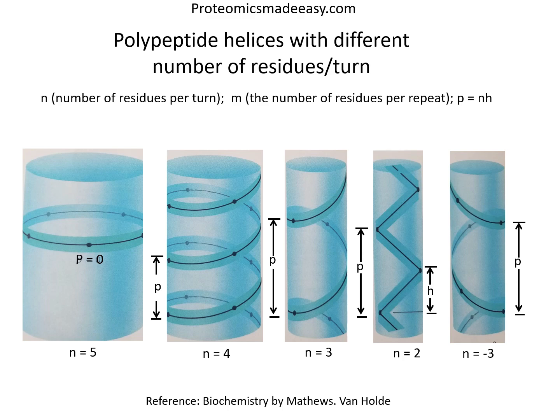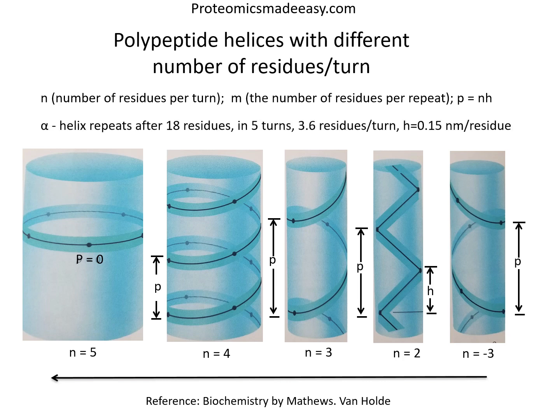If there is an integral number of residues per turn, the pitch and the repeat will be equal, so n will equal m. The pitch can be defined as P equals nH. Note that as the number of residues per turn increases, the structure changes progressively from a flat ribbon to a broad helix and eventually to a closed ring with P equal to zero. The alpha helix repeats after exactly 18 residues, which amounts to 5 turns, giving 3.6 residues per turn. We can calculate the pitch value for the alpha helix as 3.6 multiplied by the rise, which is 0.15 nanometers per residue.